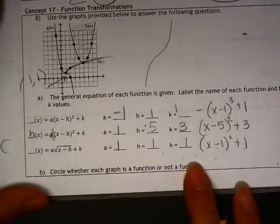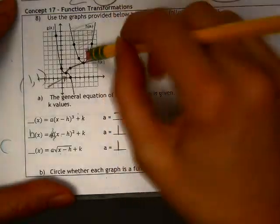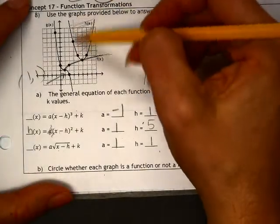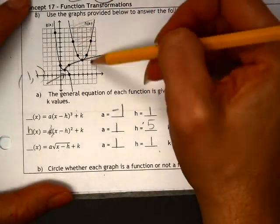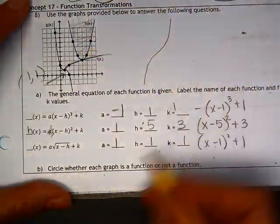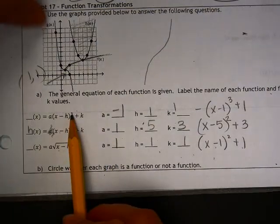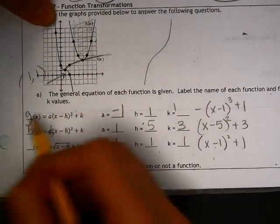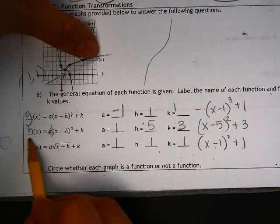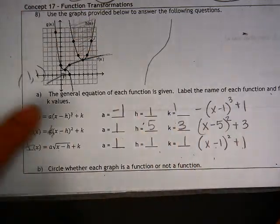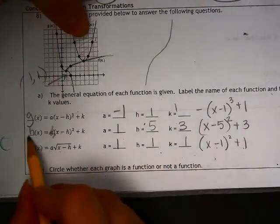Now, which graph is a function or not a function? Let's use the vertical line test. So this one, no problem. It only passes through each vertical line once. So that one is—oh wait, I forgot to put these where they go. So the cubic was the g of x, and the square root was the f of x.